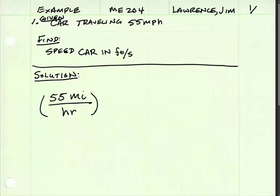First of all, let's start with changing our miles to feet. We know that there are 5,280 feet for every one mile. Then our miles cancel out. The units that we're left with are feet per hour.